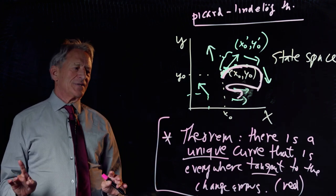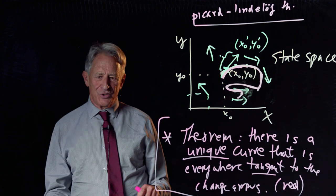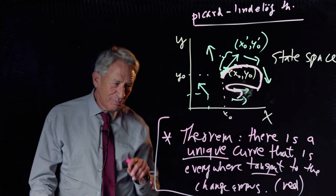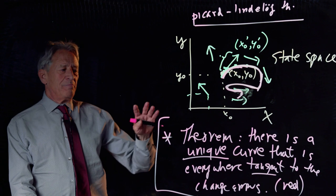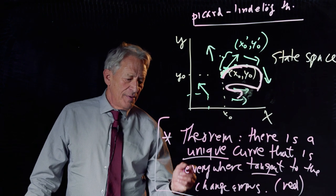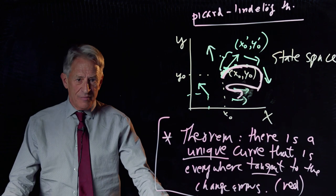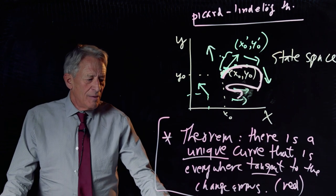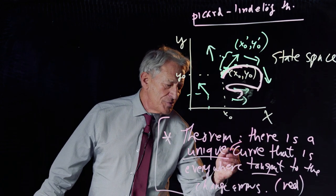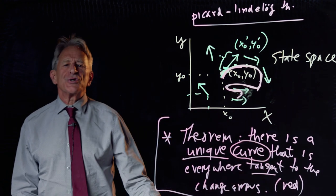And this is a theorem that has almost kind of religious significance for us because it guarantees that the vector field has a unique instruction, that there is a unique path that we get by following the change arrows everywhere. The path exists. It is unique. And it is guaranteed by a mathematical theorem. So that's great. And you think, maybe our job is over. But it isn't.